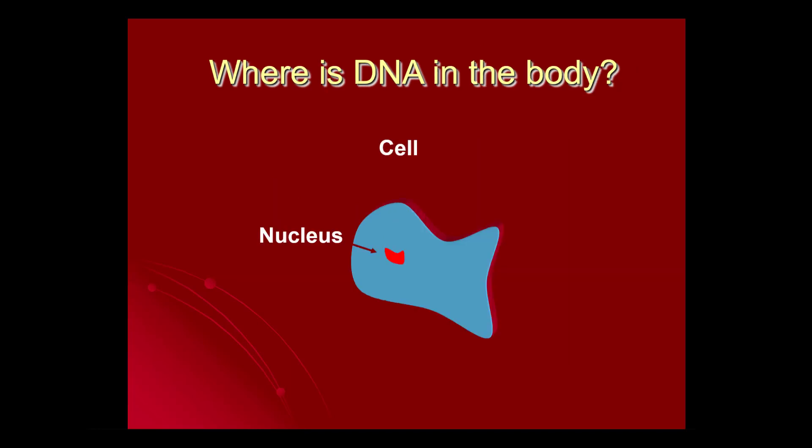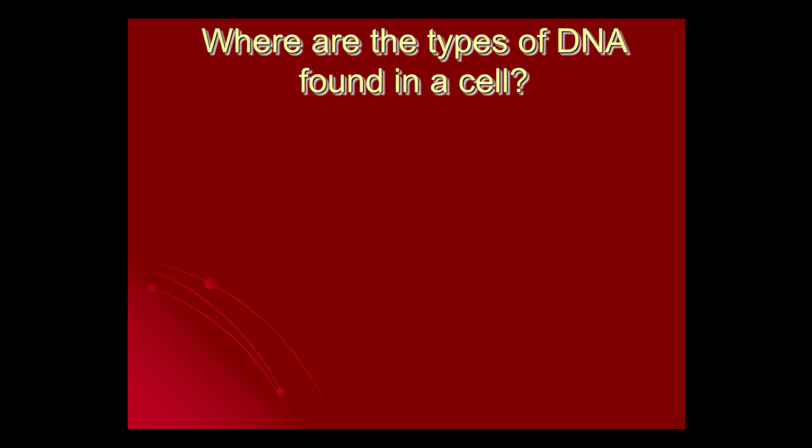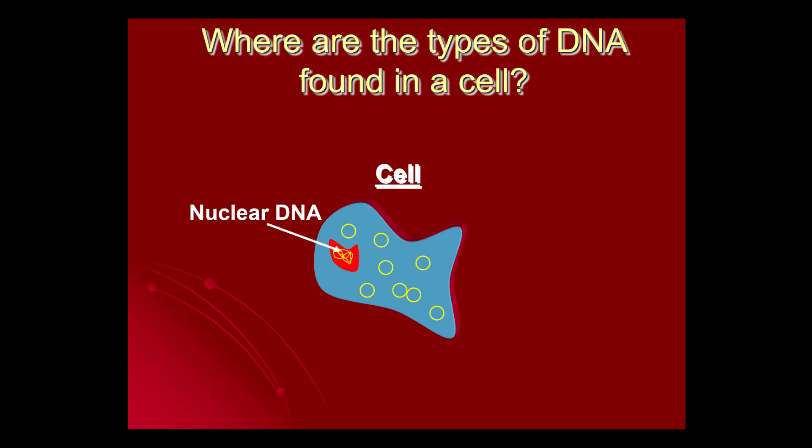Now most of the time we think about DNA being in the nucleus of cells, and that's true, but that's not the only DNA we find. There are other types of DNA found in a cell. If we think about our nucleus is that red blob in the center, all these little yellow rings that I'm showing you outside, those are not nuclear DNA. Here's our nuclear DNA, and all of these little rings are mitochondrial DNA.